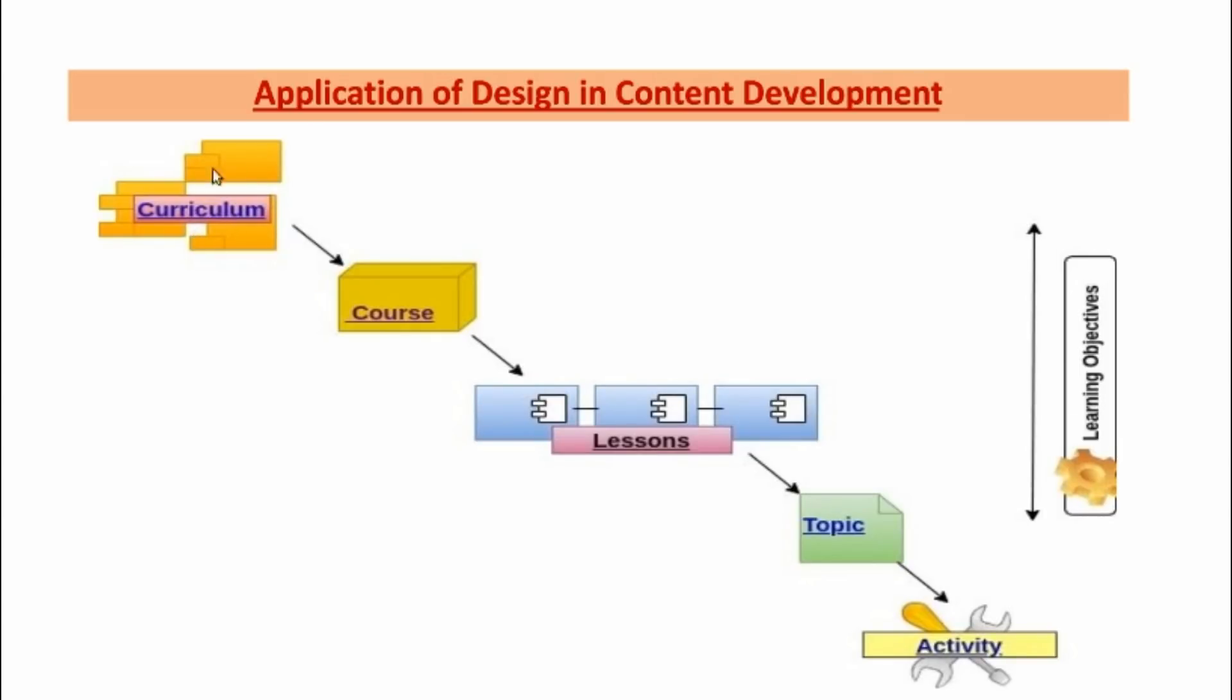So if we take a design of content pyramid where the curriculum is at the topmost level, it is always found to be consisting of a collection of courses related to a subject. The course is again made up of a cluster of small components called lessons. The lessons are in turn cluster of topics which are organized to accomplish the broad as well as specific learning objectives.